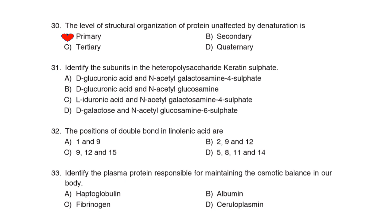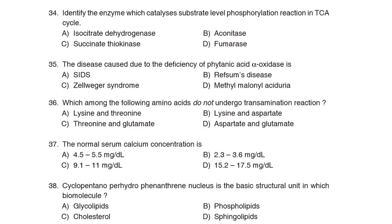31st Question: Identify the subunit in the heteropolysaccharide keratan sulfate. Correct Answer: Option D: D-galactose and N-acetylglucosamine-6-sulfate. 32nd Question: The position of double bonds in linoleic acid is Correct Answer: Option C: 9, 12, 15. 33rd Question: Identify the plasma protein responsible for maintaining osmotic balance in the body. Correct Answer: Option B: Albumin.